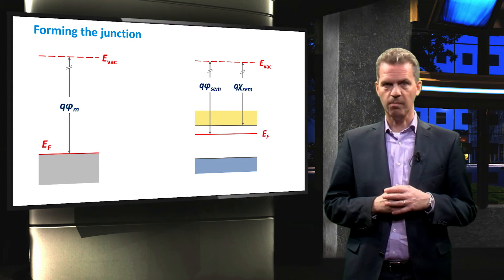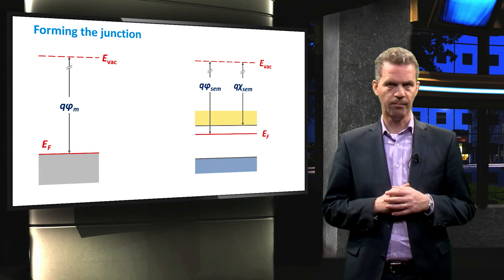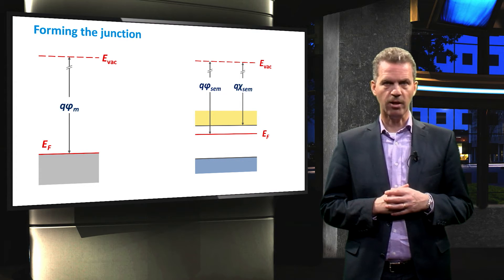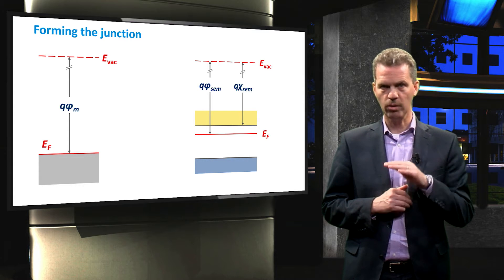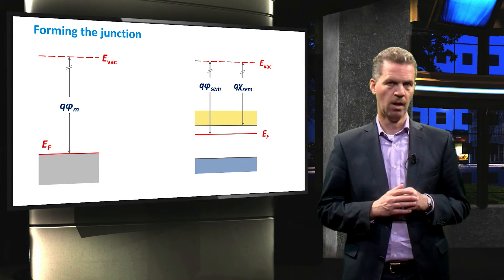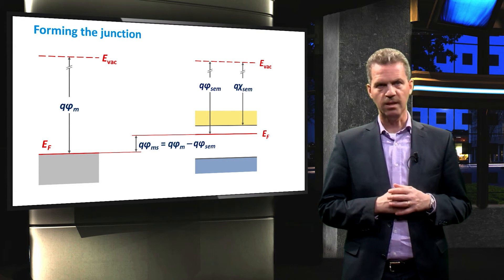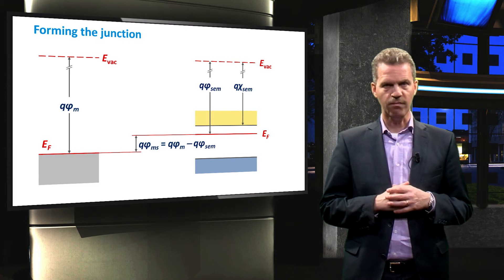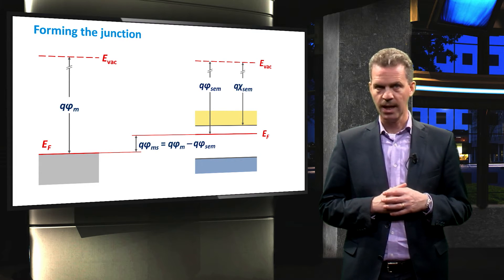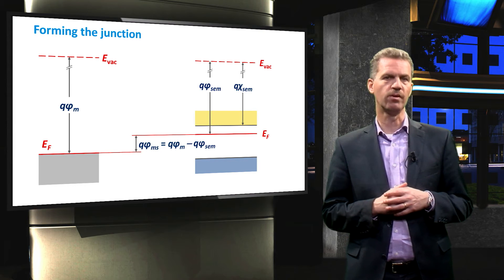Let's start with the band diagrams of the metal and semiconductor that we have seen earlier. In this case the band diagrams of the two materials have been lined up along the vacuum level. If we take a look at the Fermi levels, we see a difference between the metal and the semiconductor. We define this difference as Phi_ms, called the metal-semiconductor work function difference.